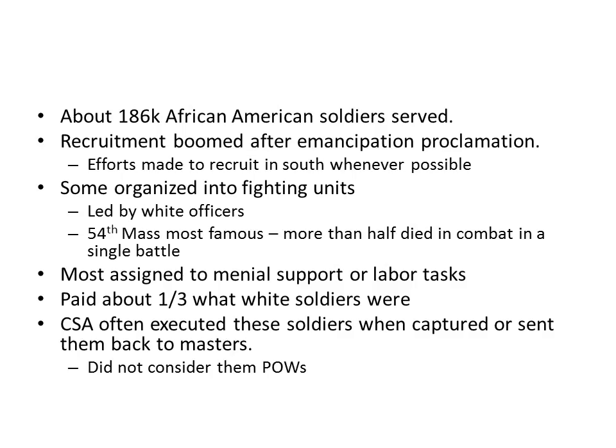In addition to cutting off support abroad for the Confederate states, the Emancipation Proclamation also led to a significant boom in the number of African-American soldiers they were able to recruit — about 186,000 total during the war. Some were organized into fighting units led by white officers, with the 54th Massachusetts being by far the most famous, although more than half of that unit died in combat in a single battle. However, most of the soldiers were put into menial support or labor tasks and paid about one-third of what white soldiers were. Whenever captured, the Confederate states tended to execute these black soldiers rather than treat them as POWs, and if they didn't execute them, they sent them back to their masters.